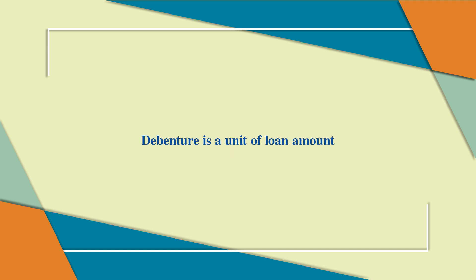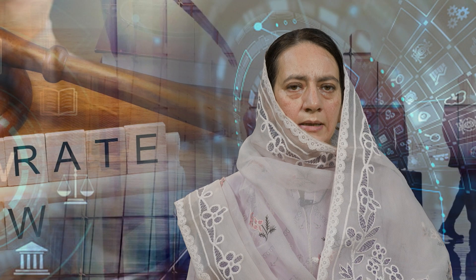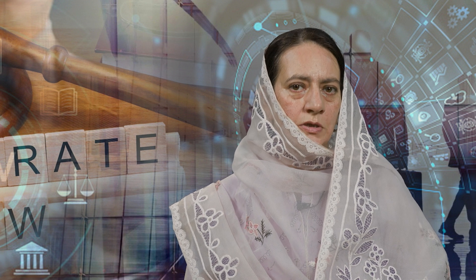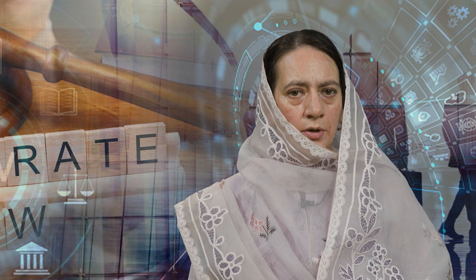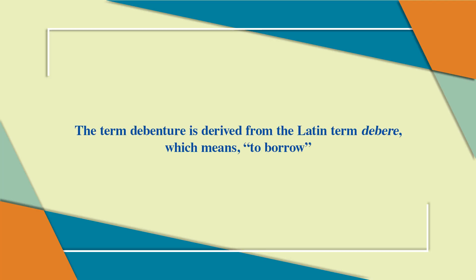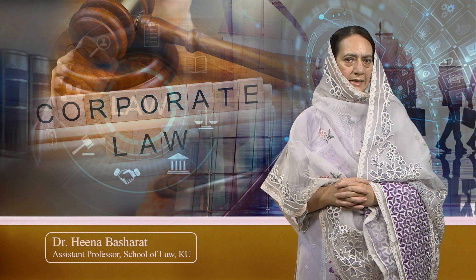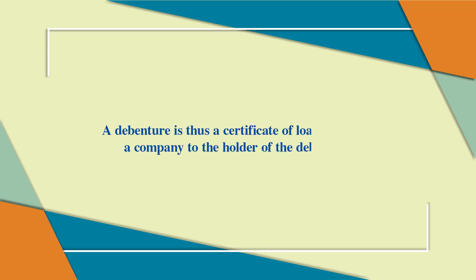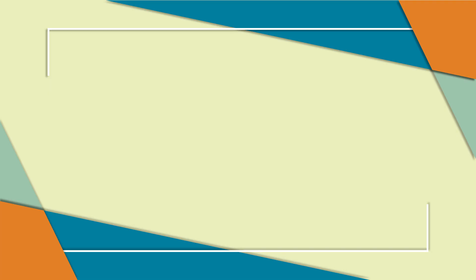A debenture is a unit of loan amount. When a company intends to raise the loan amount from the public, it issues debentures. A person holding debentures is called a debenture holder. The term debenture is derived from the Latin term 'debere' which means to borrow. A company may find it difficult to borrow large sums from a single lender, so it may split the amount into several units and offer the public to purchase debentures — thus a certificate of loan issued by the company.